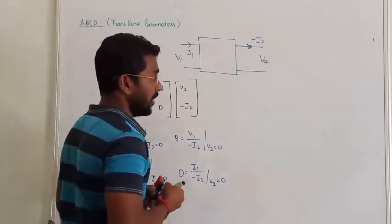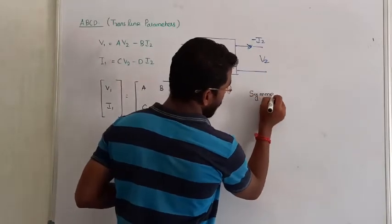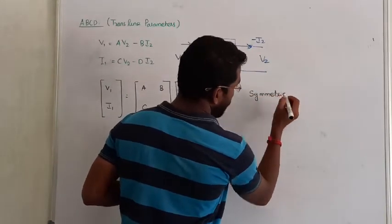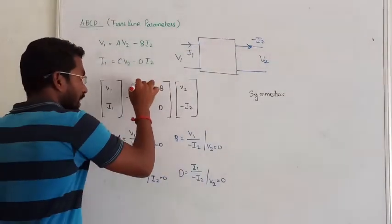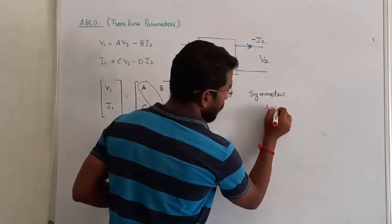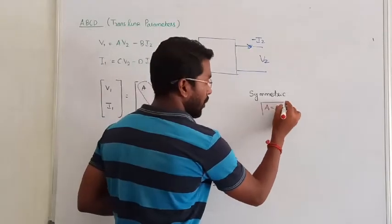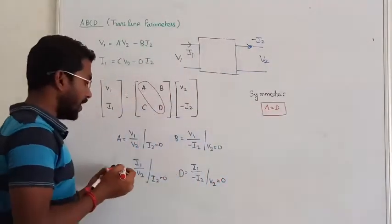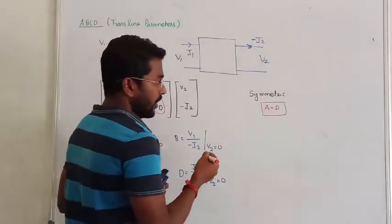How do we know the network is symmetric? So again, the condition for symmetricity is, once again we have to check. In case of ABCD parameter, whether the value of A and D are equal. So A and D equal means the network is symmetric. Don't forget, condition is very very important. So if A and D are equal, then the network is symmetric.